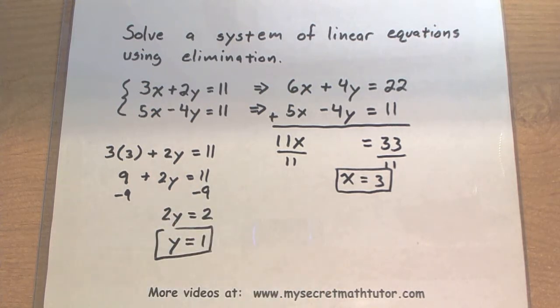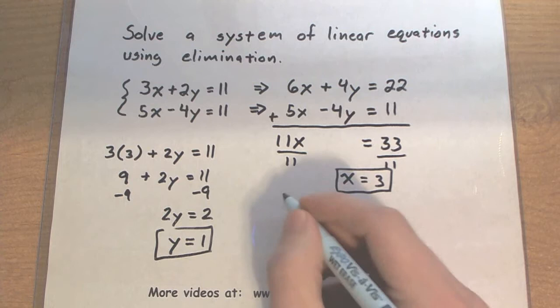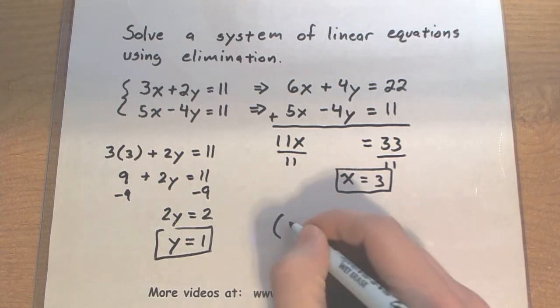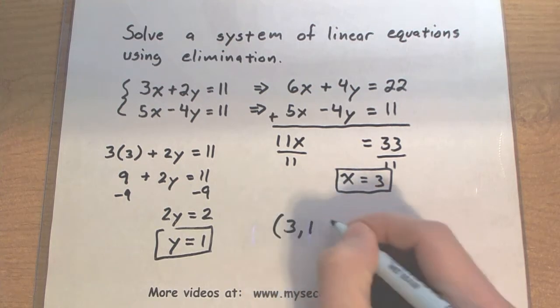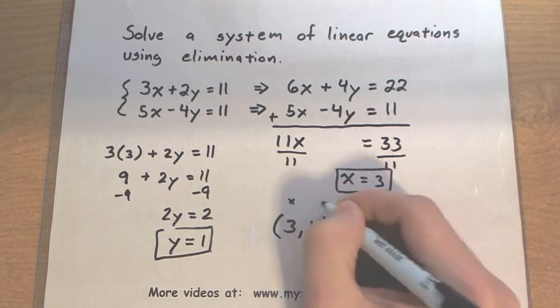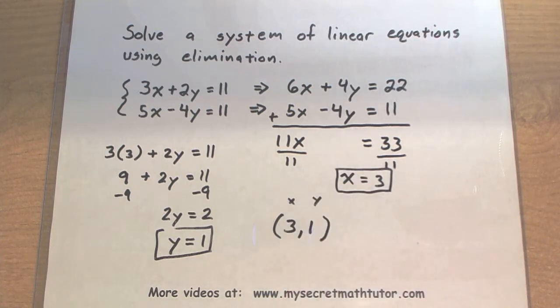Now when you get both parts, both variables, the x and the y, you can say that your solution is the point (3,1). The first one is the x and the next one is the y. If you'd like to see more videos, please visit MySecretMathTutor.com. We'll see you next time.